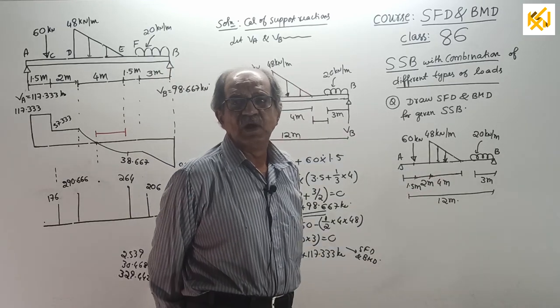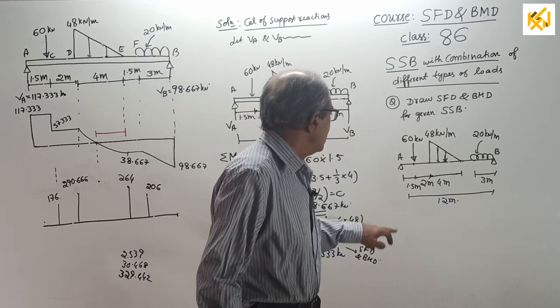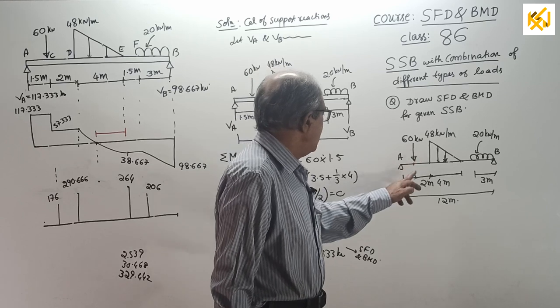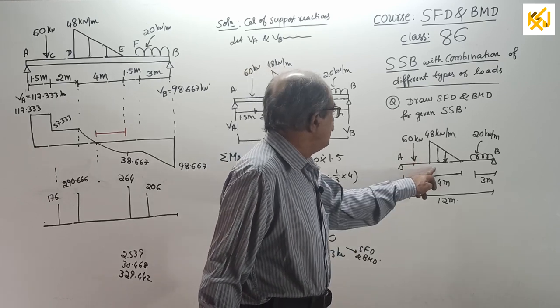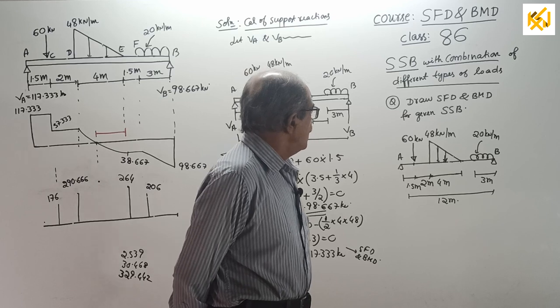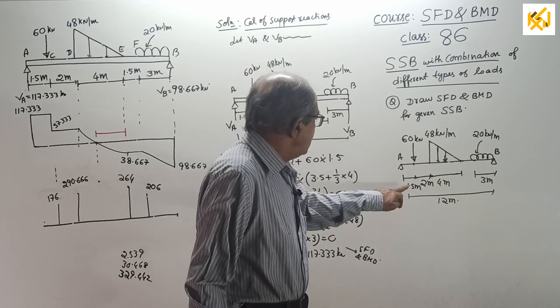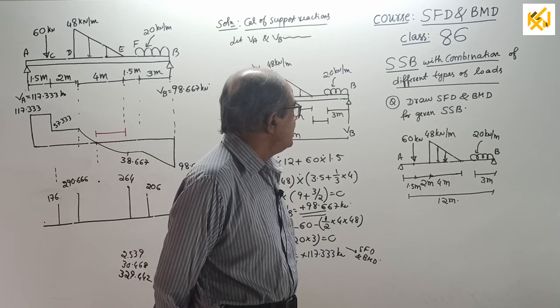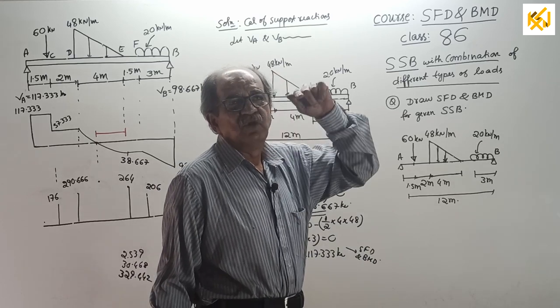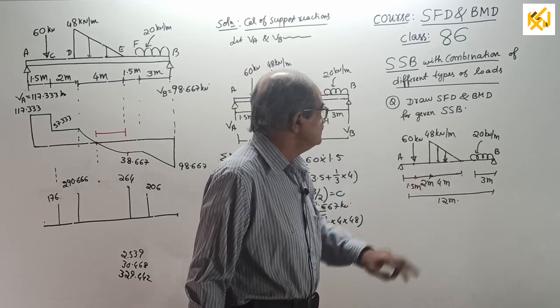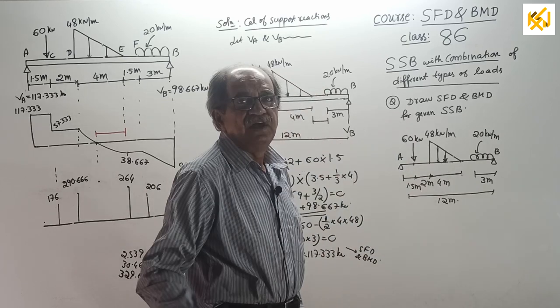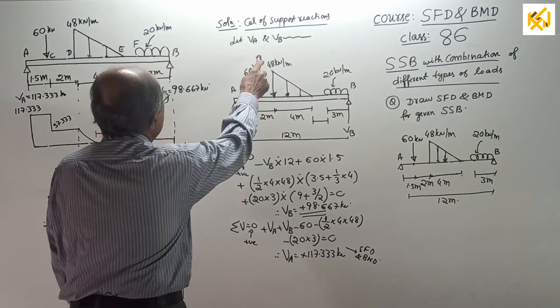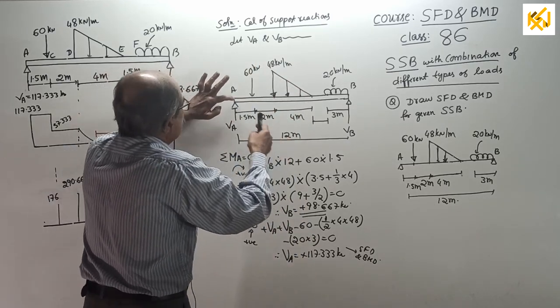You can write down: a simply supported beam of span 12 meter is loaded by a constant load of 60 kN at 1.5 meter from left end, uniformly varying load starting at 3.5 meter from left end where its intensity is 48 kN per meter which reduces to zero linearly after four meter, and from right side UDL of 20 kN per meter for three meter.